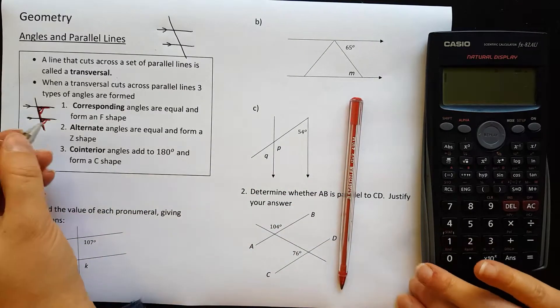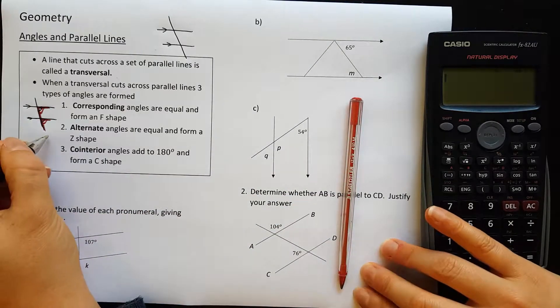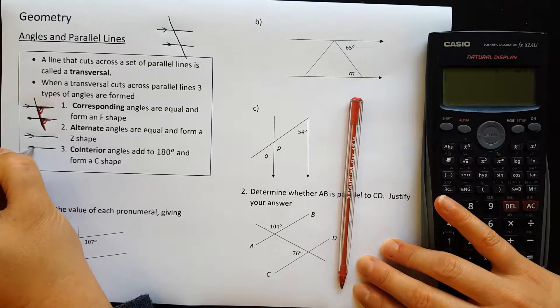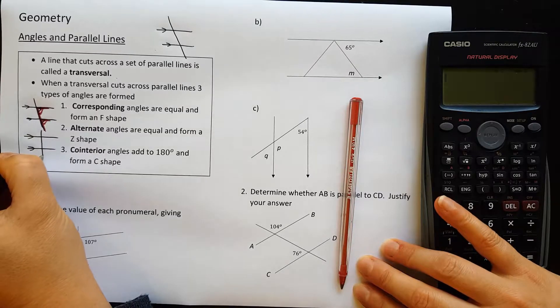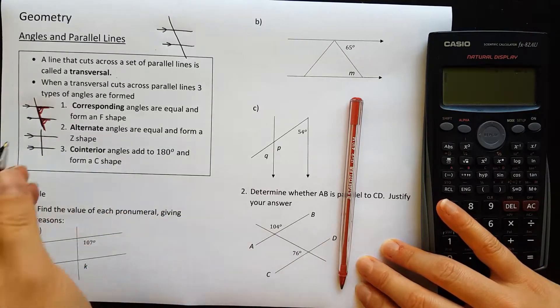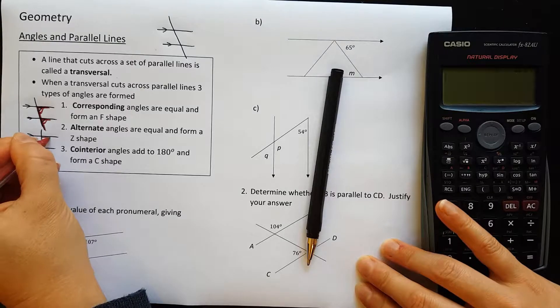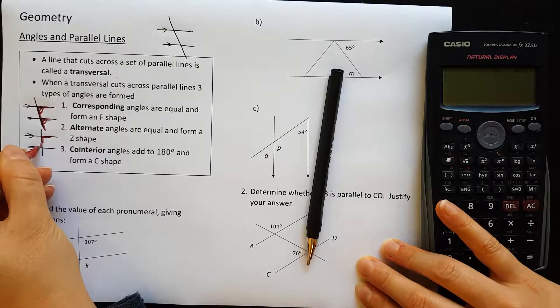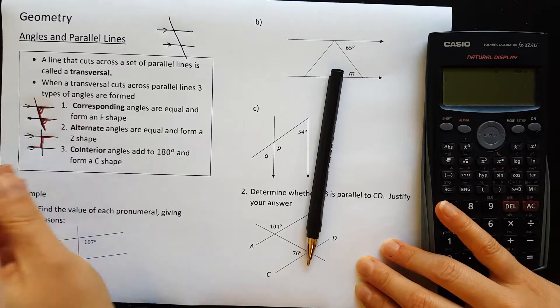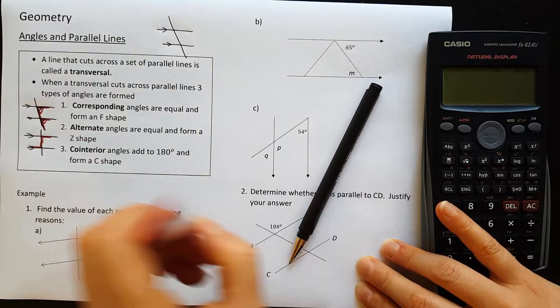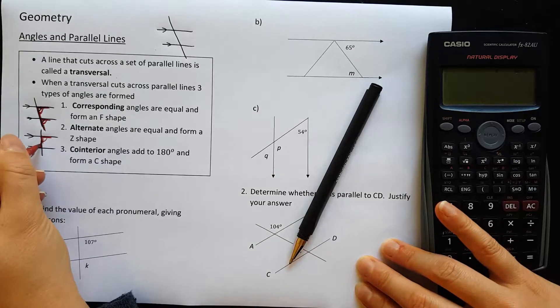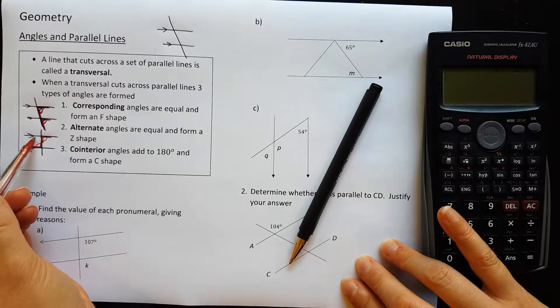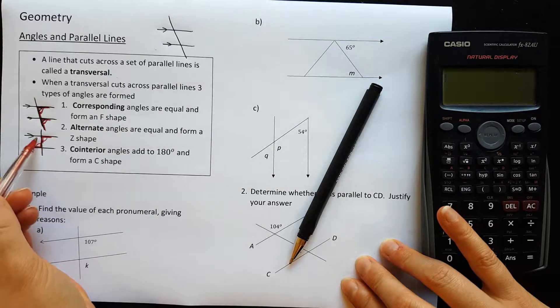Our next type is called alternate angles and they form a Z shape. So here's our parallel lines. If I cut it with my transversal, if I draw an angle there and an angle there, see how that's forming a Z shape. That means that this angle and this angle would be equal. Again it can be a backwards Z shape, so it could be the ones on this side as well.